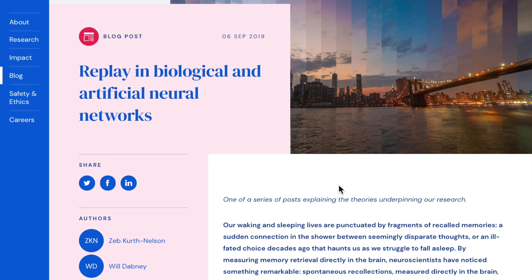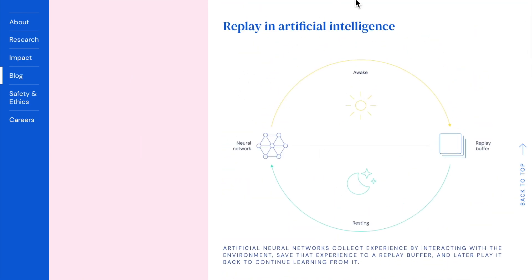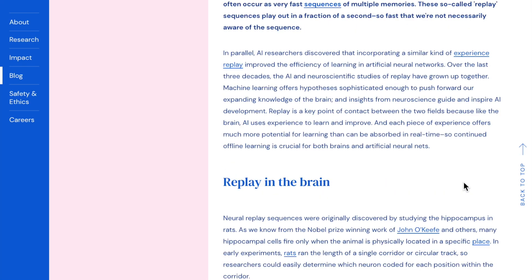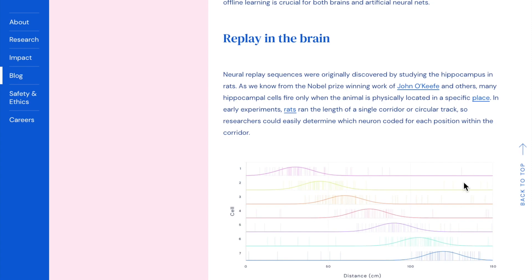We'll start our tour of blog posts with this really interesting post from DeepMind about experience replay and the analogies between neuroscience and artificial neural networks. The article talks about how with reinforcement learning agents, we can't always learn online — every time you have a new experience, you don't completely update and train the networks. Instead, experience is stored in a replay buffer, and then offline, the agent replays the experience and updates its parameters.